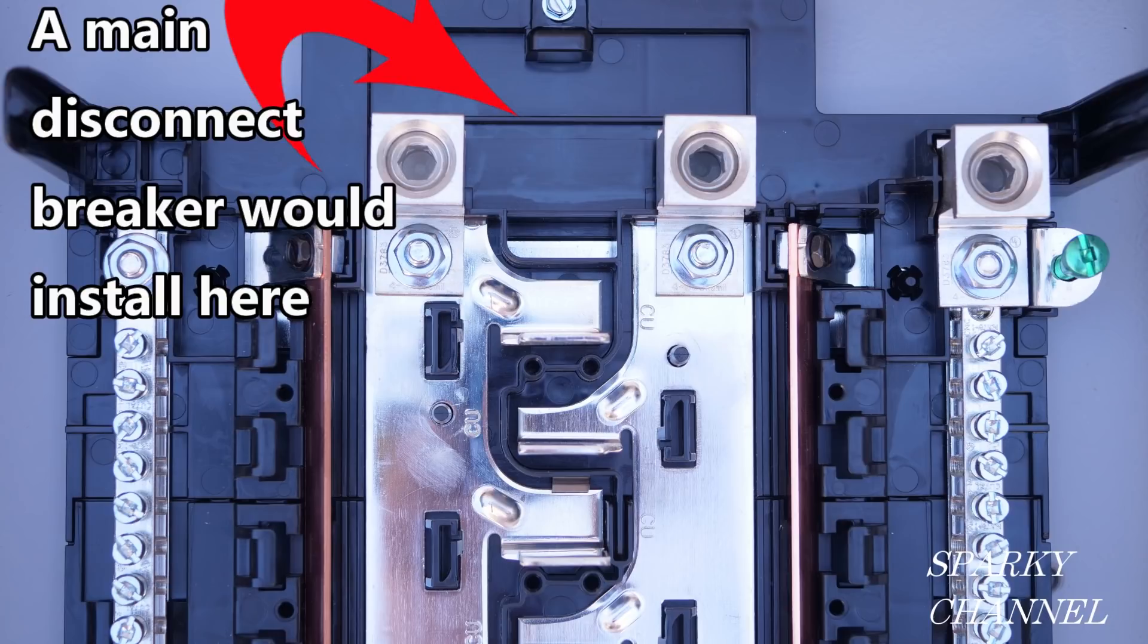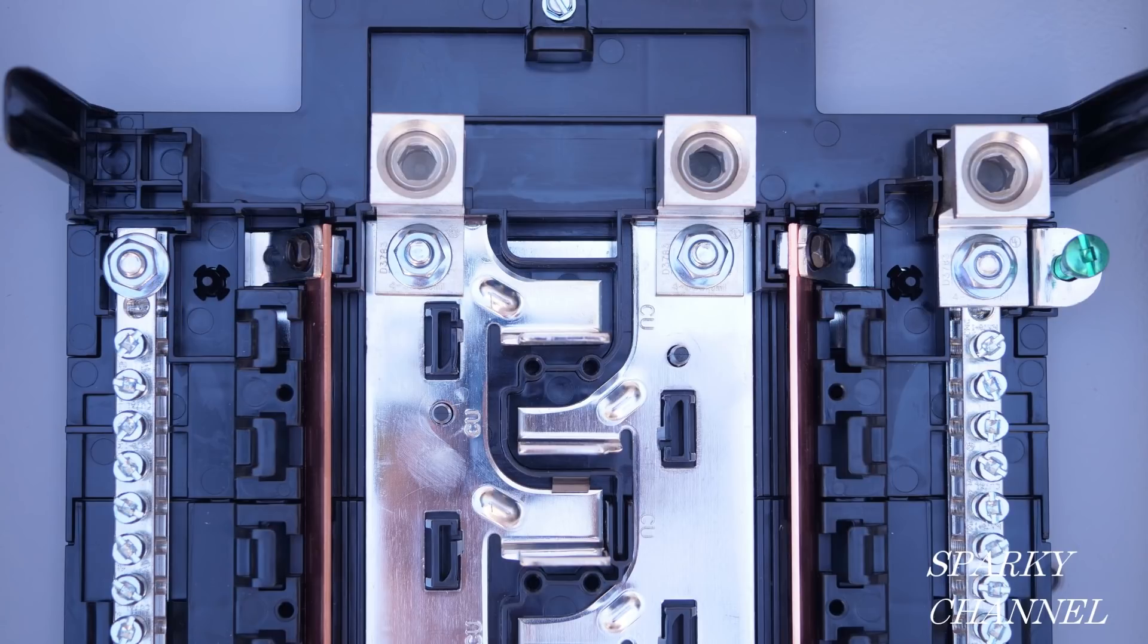If you'd like to add a main disconnect to this load center and use it as a main panel, and this panel is then your system's first disconnect, then you will need to screw in the green bonding screw.